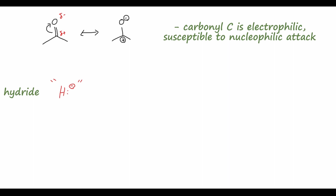We have lots of compounds that can act like H⁻. Two of those that are very common in organic synthesis are sodium borohydride (NaBH₄) and lithium aluminum hydride (LiAlH₄). The borohydride anion and the aluminum hydride anion are the important things to look at — sodium and lithium are just counter ions. The borohydride is a boron center with four hydrogens; boron has a formal negative charge because it has four bonds instead of its preferred three.